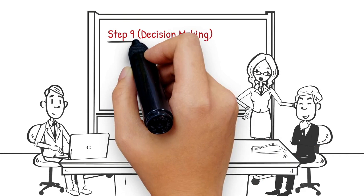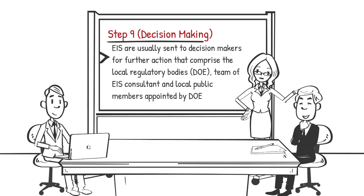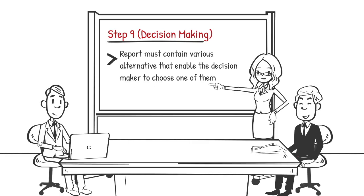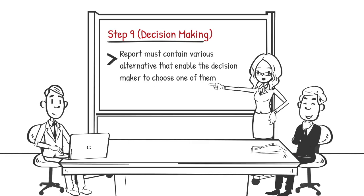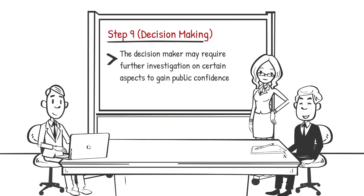Step 9 is about decision making. The environmental impact statement is sent to decision makers for further action, comprising the local regulatory bodies, the team of environmental impact statement consultants, and local public members appointed by the Department of Environment. The report must contain various alternatives that enable the decision maker to choose one. The decision maker may require further investigation on certain aspects to gain public confidence. After this process, construction of the project can be started if approved, with or without extra conditions.